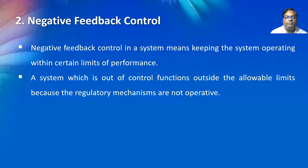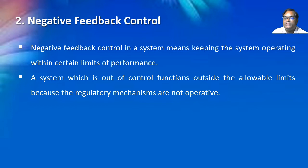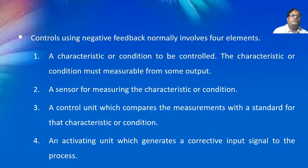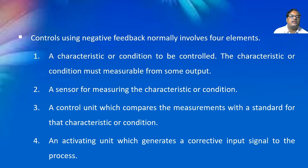Negative feedback control means keeping the system operating within certain limits of performance. A system which is out of control functions outside the allowable limits because the regulatory mechanisms are not operative. Controls using negative feedback normally involve four elements: the characteristics or condition to be controlled, which must be measurable from the output; a sensor for measuring the characteristics of that condition; a control unit which compares the measurement with standards; and an activating unit which generates a corrective input signal to the process.